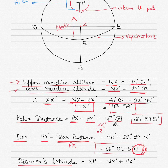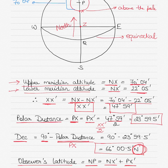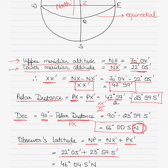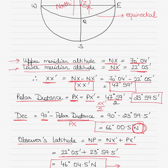The observer's latitude is NP, which equals NX dash plus X dash P (or PX dash). NX dash is 22 degrees 05 minutes — the altitude of the body below the pole — plus PX dash, the polar distance we calculated. Adding the two together gives the observer's latitude as 46 degrees 04.5 minutes north — it is north because the observer is north of the celestial equator.